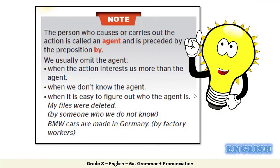Now let's read this important note. The person who causes or carries out the action is called an agent and is preceded by the preposition 'by.' We usually omit or delete the agent when the action interests us more than the agent, when we don't know the agent, or when it is easy to figure out who the agent is. Examples: 'My files were deleted' — by someone unknown. 'BMW cars are made in Germany by factory workers.'